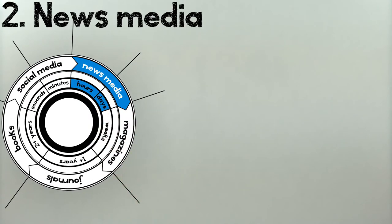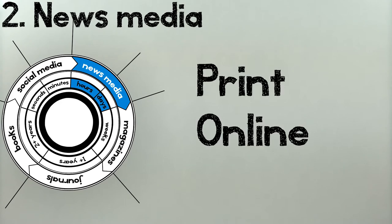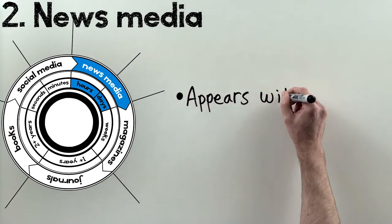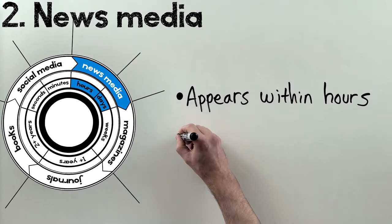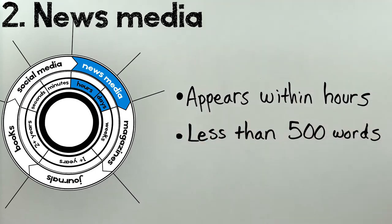News is the second stage, and that includes print, online, and broadcast. News is produced within 24 hours of an event, and stories are brief, rarely more than a few hundred words.